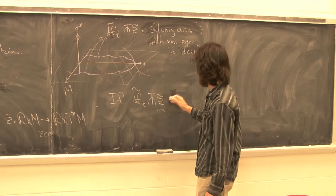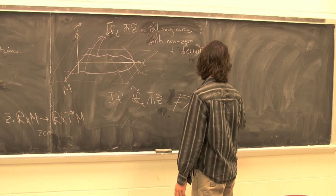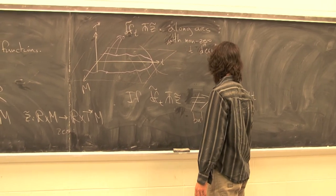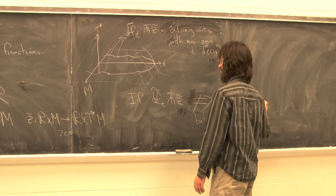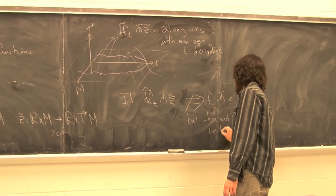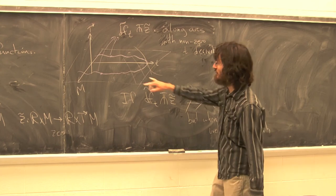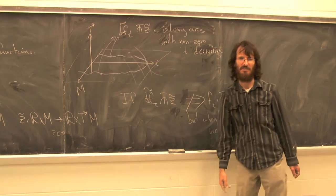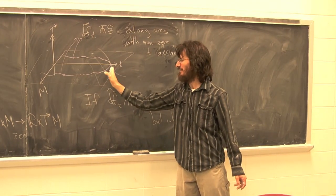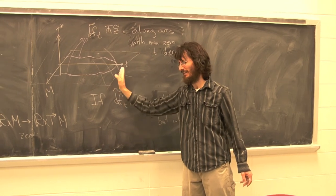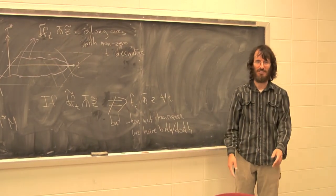This birth or death phenomenon is also a transversality condition of a certain kind, where two critical points come together. At the fixed time of birth or death, df is not transverse to the zero section, but the sheet of df's and the sheet of zero sections are transverse. That's the picture I'll try to explain next time.